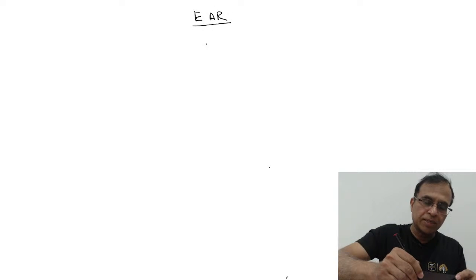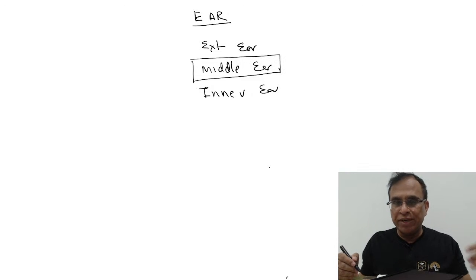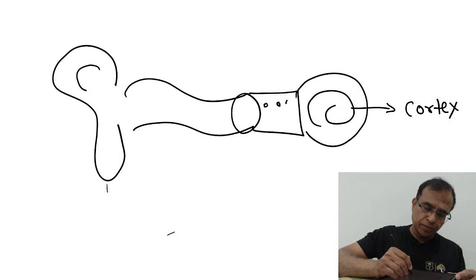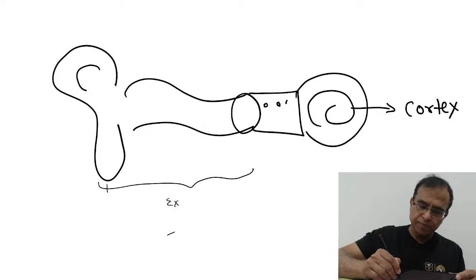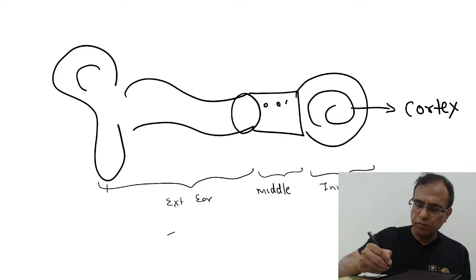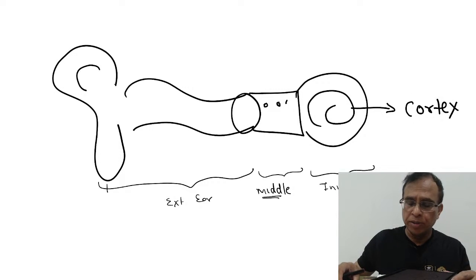We all know that the ear has three parts - outer ear, middle ear, and inner ear. I will start with the middle ear. We have outer ear, middle ear, and inner ear. The middle ear is the most important part, so we will spend most of the time in the middle ear. The outer and inner ear are less important, so we will spend less time on those two areas. I am talking about anatomy, and the middle ear is the only important part.